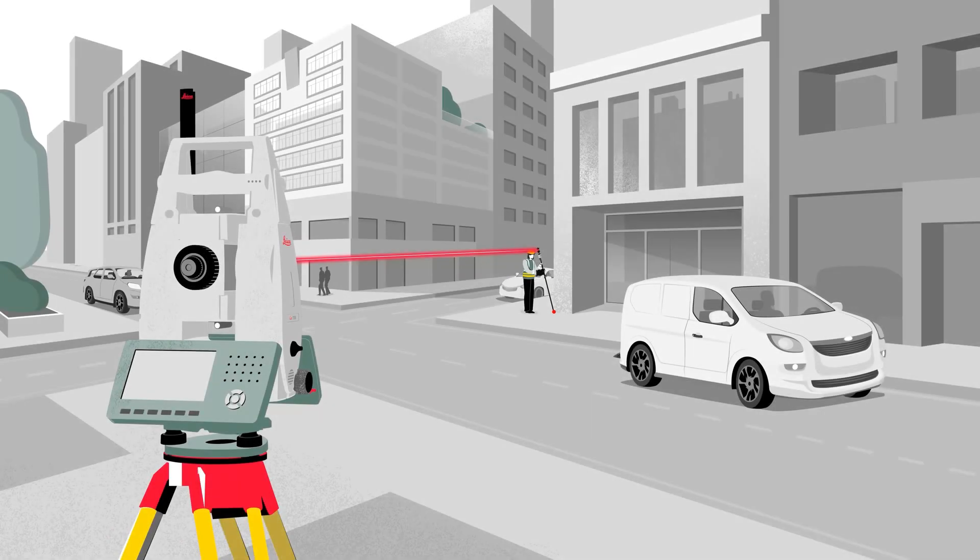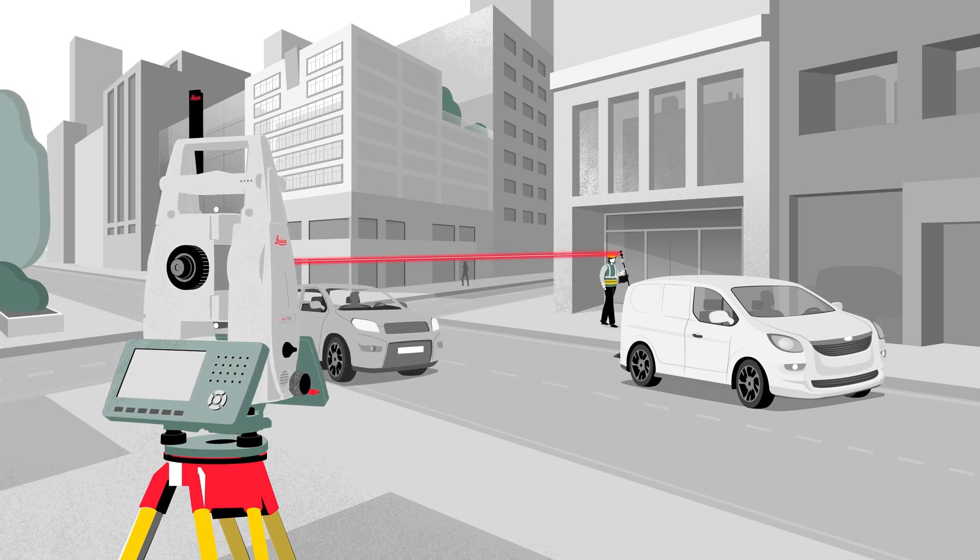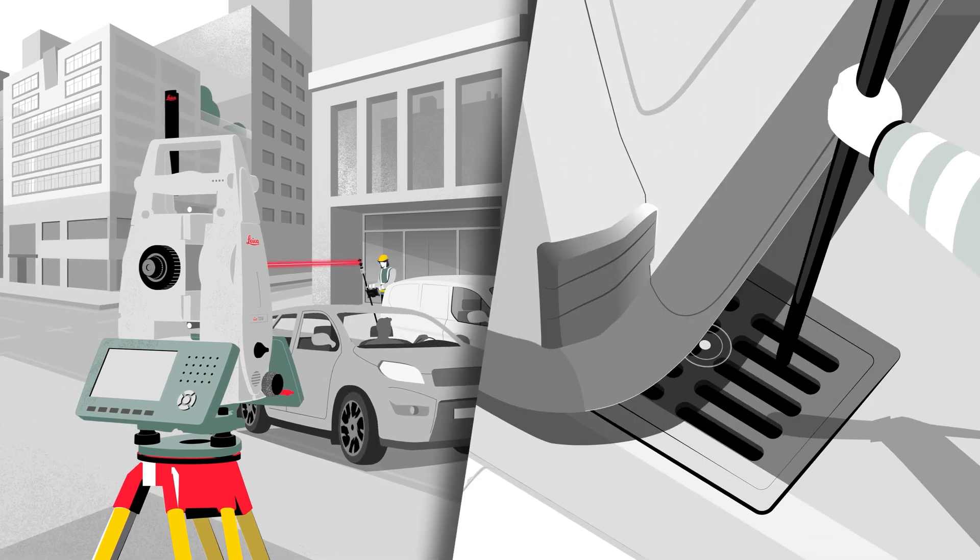With the tilt compensation functionality of the AP20 AutoPole, there is no need to level the pole anymore. The Leica AP20 also makes it possible to measure points that are not easily accessible without the risk of delays or unnecessary additional setups.